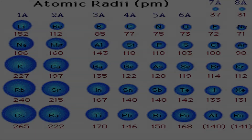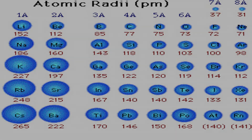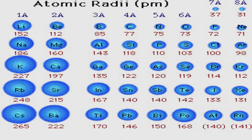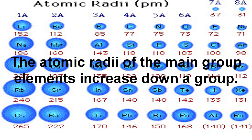Another of the big trends is atomic radii, which is half the distance between the nuclei of two atoms chemically bonded together. Along periods, there are smaller atoms because of the increasing positive charge of the nucleus, which pulls the electrons closer. The atomic radii of the main group elements increase going down the group.